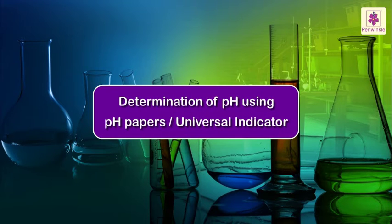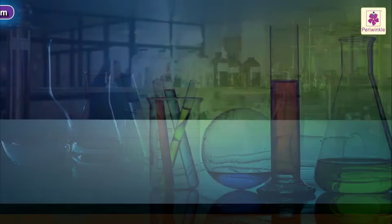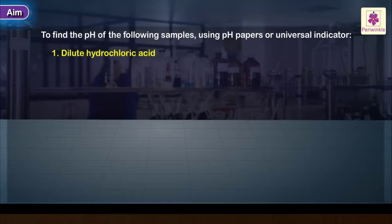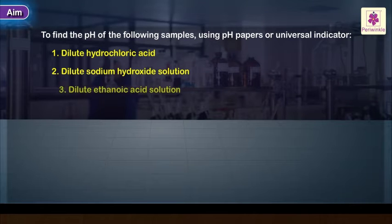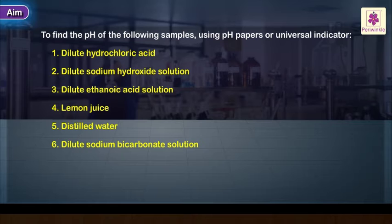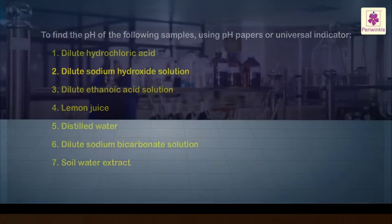The determination of pH using pH papers or universal indicator. The aim is to find the pH of the following samples: one, dilute hydrochloric acid; two, dilute sodium hydroxide solution; three, dilute ethanoic acid solution; four, lemon juice; five, distilled water; six, dilute sodium bicarbonate solution; seven, soil water extract.